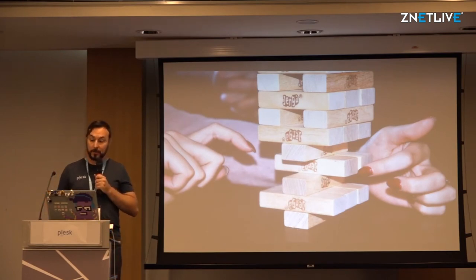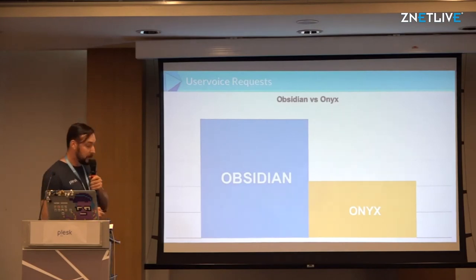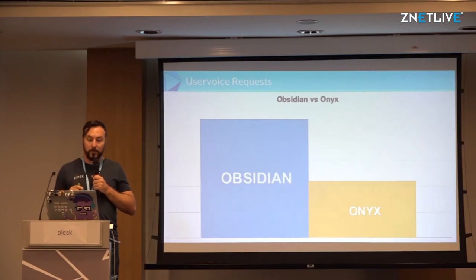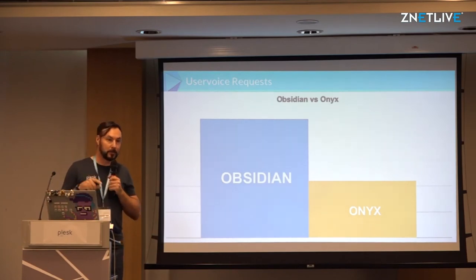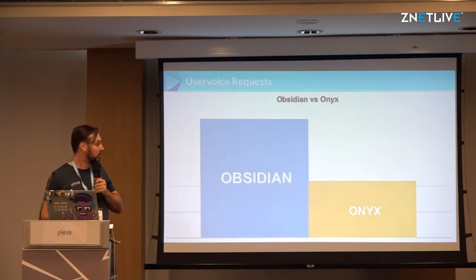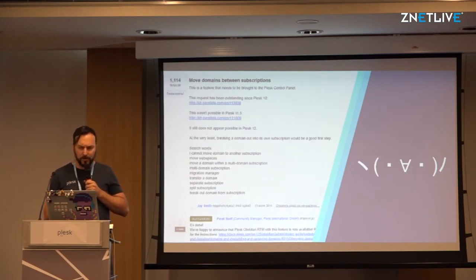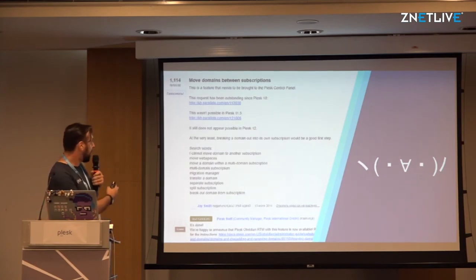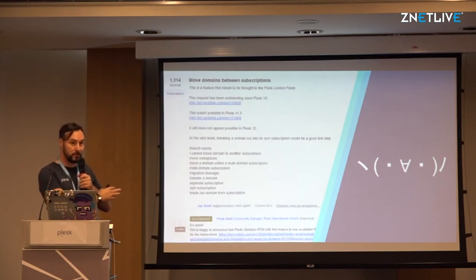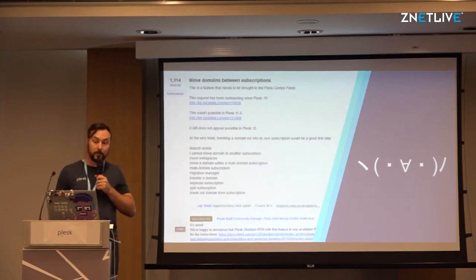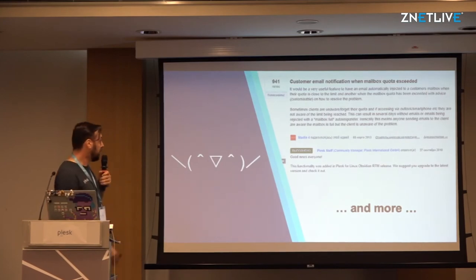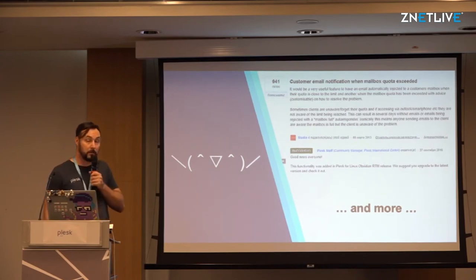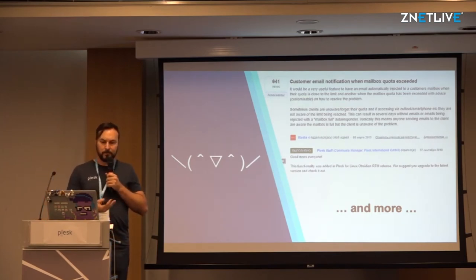Even though we rely on numbers a lot, it doesn't mean we're not listening to our customers. We have closed more than twice the amount of customer feature requests — based on UserVoice requests — in the initial release of Plask Obsidian compared to the latest version of Plask Onyx 17.8. We implemented the absolute top most popular customer requests, like the move domains between subscriptions feature — which had an absolute record in terms of votes on UserVoice — and the ability to notify customers through email when their mailbox quota is exceeded. And as you understand, this is just the tip of the iceberg.